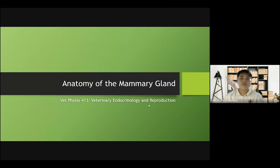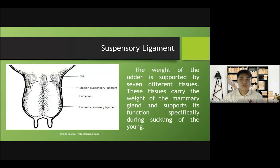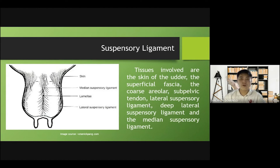The anatomy of the mammary gland. The weight of the udder is supported by seven different tissues. These tissues carry the weight of the mammary gland and support its function, specifically during suckling of the young. Tissues involved are the skin of the udder, the superficial fascia, the coarse areolar, the sub-pelvic tendon, lateral suspensory ligament, deep lateral suspensory ligament, and the medial suspensory ligament.